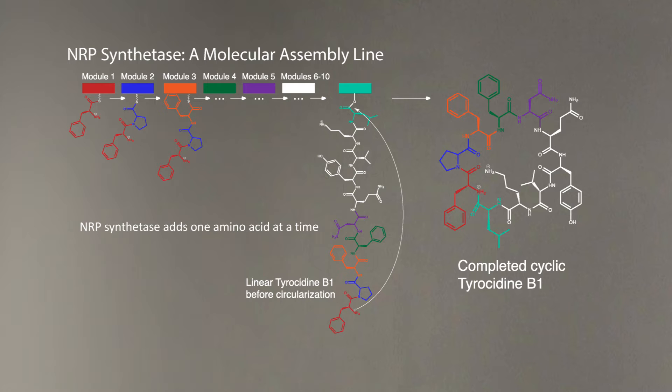This adenylation domain synthesizes one amino acid at a time, and since tyrocidine is 10 amino acids long, there must be 10 adenylation domains in NRP synthetase in this case. So, what are particular amino acids, or what is the non-ribosomal code that decides what amino acid to synthesize?